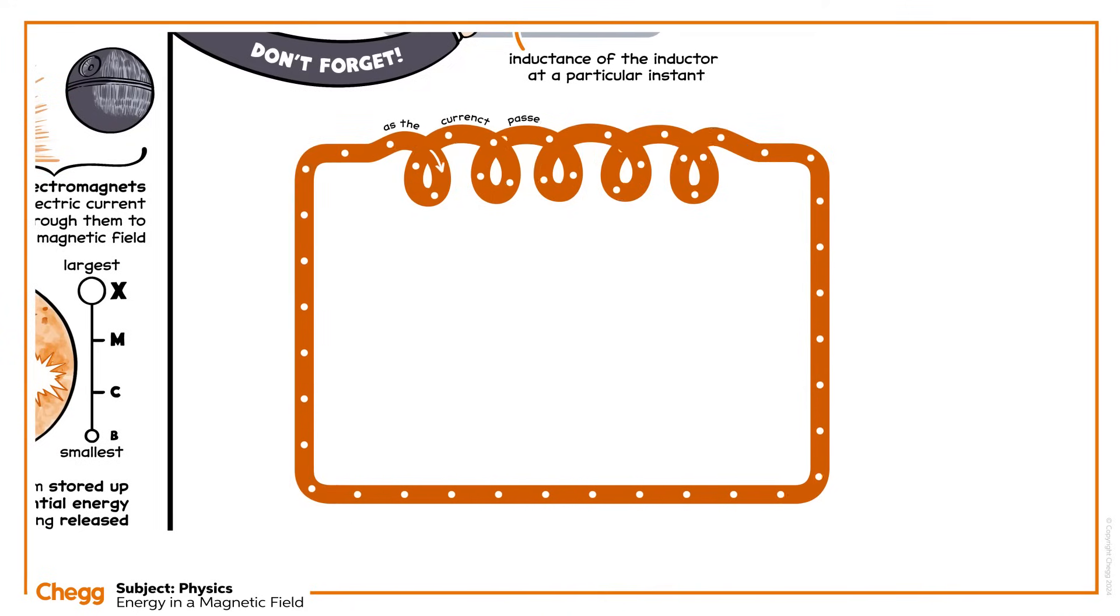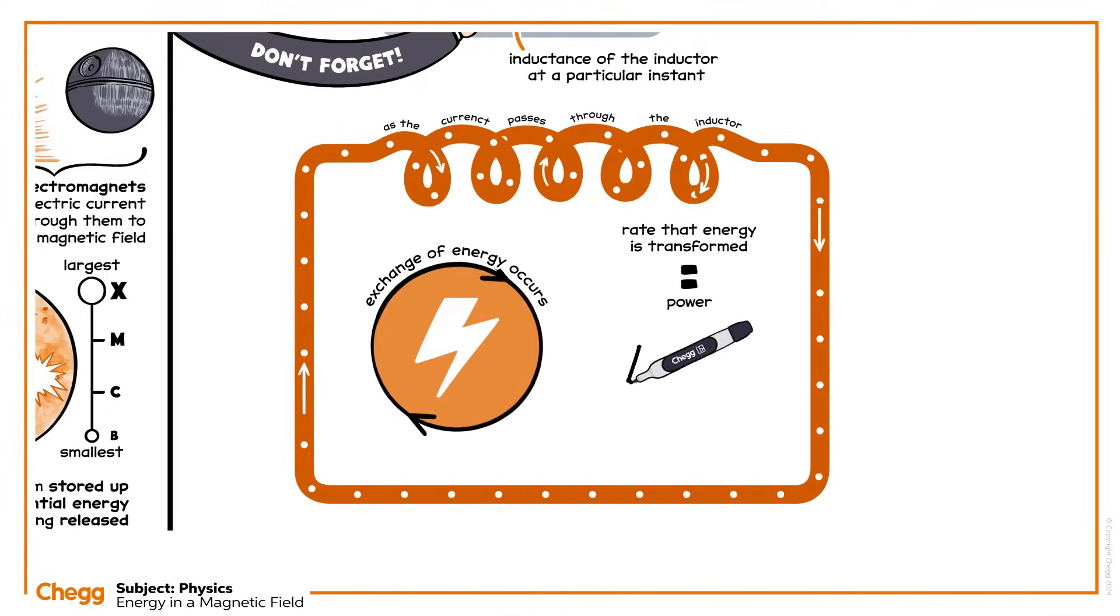As the current passes through the inductor, an exchange of energy occurs. The rate at which energy is transformed is known as the power, and it's calculated by multiplying the induced voltage epsilon by the current I. Power is measured in watts.